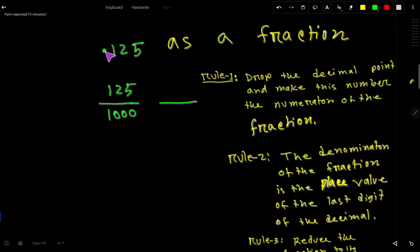After dropping the decimal we get 125. For the decimal, write 1, and for every digit after the decimal write 0. For 1 we write 0, for 2 we write 0, for 5 we write 0. This is an easy process to remember.